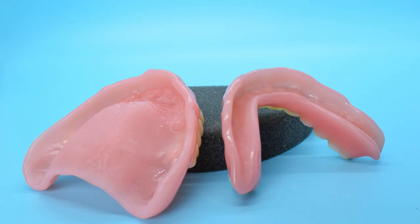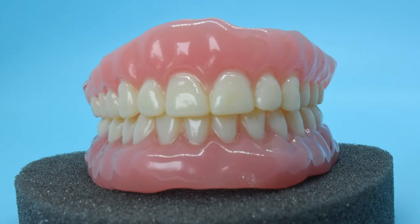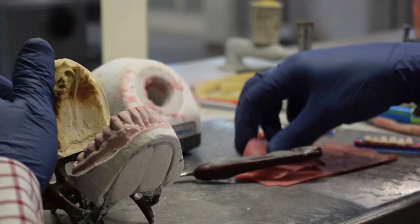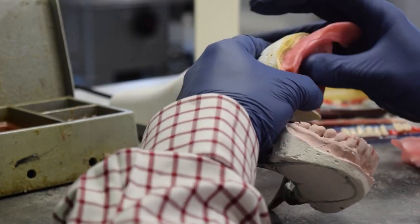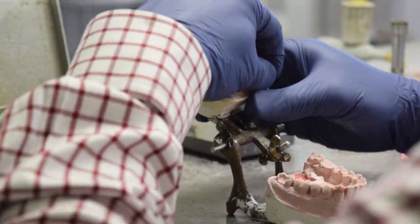Full Acrylic Dentures traditionally made at Utica Dental Lab. Once stone models are poured from your impressions and the lab receives an articulated bite block from the dentist, your dentures can begin to take shape.